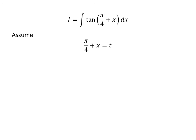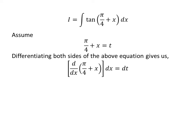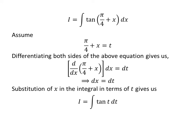Let us apply the substitution method to solve the integral. Assume π/4 + x is equal to t. Taking the differential of both sides, since the derivative of the constant π/4 is 0 and the derivative of x is 1, differential of x equals differential of t. Substituting gives us i equal to the integral of tan(t) with respect to t.